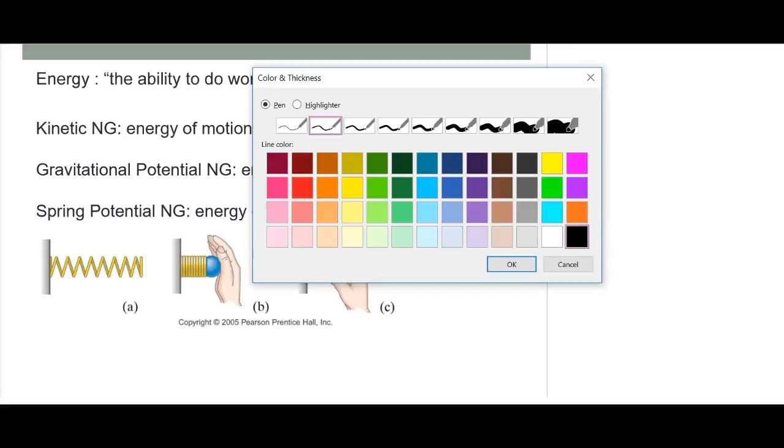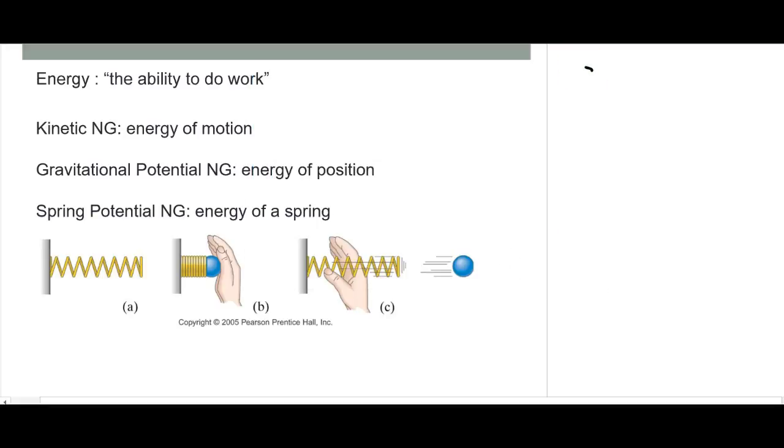We just learned that when energy is conserved, energy at one location equals energy at a second location. When energy is not conserved, we have energy at one location plus work non-conservative equals energy at that second location.